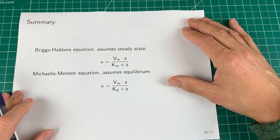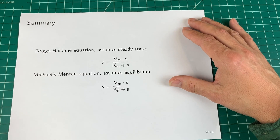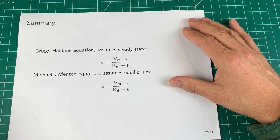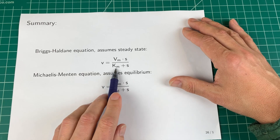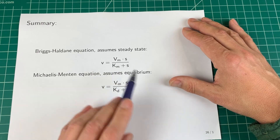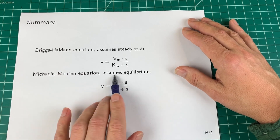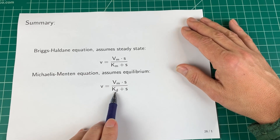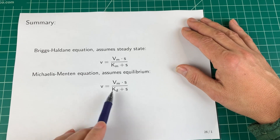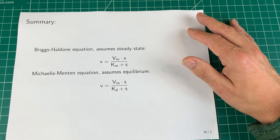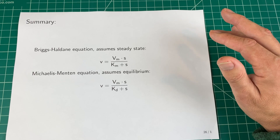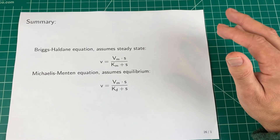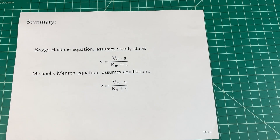In summary, we've done two derivations that yield equations looking identical except for the interpretation of the denominator symbol. The Briggs-Haldane equation (steady state assumption) has K_m in the denominator — the substrate concentration at half maximum velocity. The Michaelis-Menten equation (rapid equilibrium) has K_D — the dissociation constant. Next time, we'll look at what happens when we relax the restriction that product is negligible, since in real cells there is always product that can be converted back to substrate.